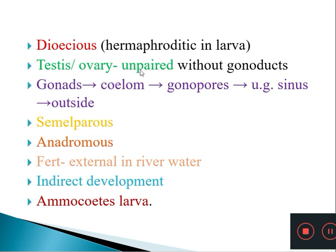Since there are no gonoducts, the testis or ovary release sperms or ova directly into the coelom. From the coelom, gametes pass through openings called gonopores into the urinogenital sinus, and from there they exit through the urinogenital aperture at the tip of the urinogenital papilla.